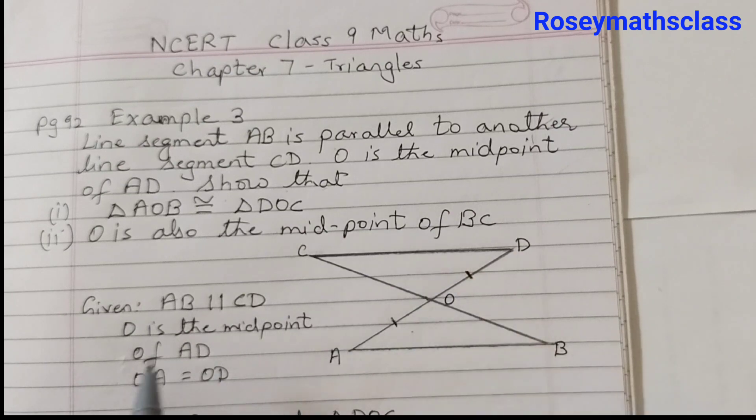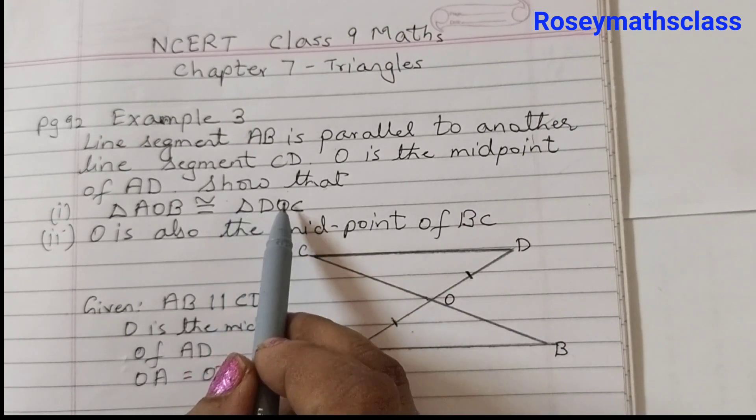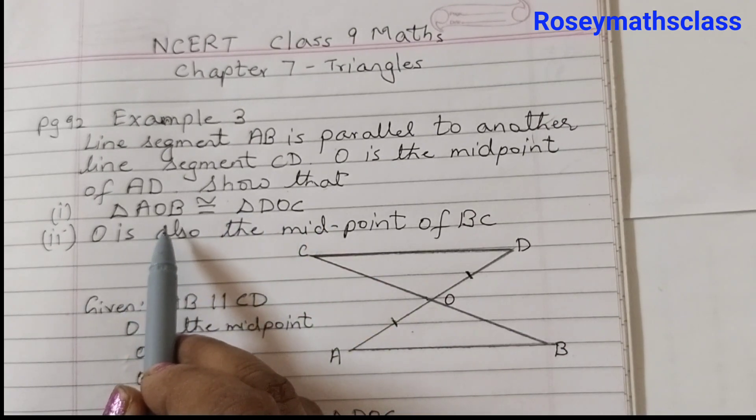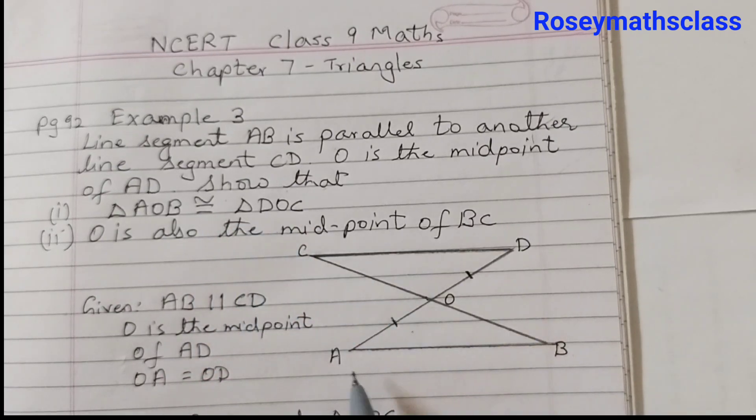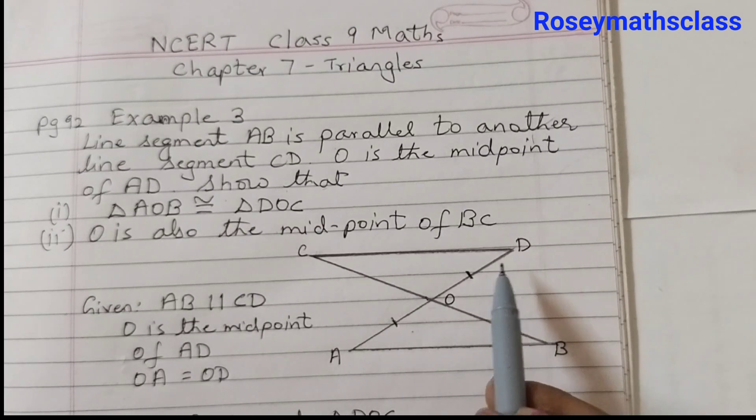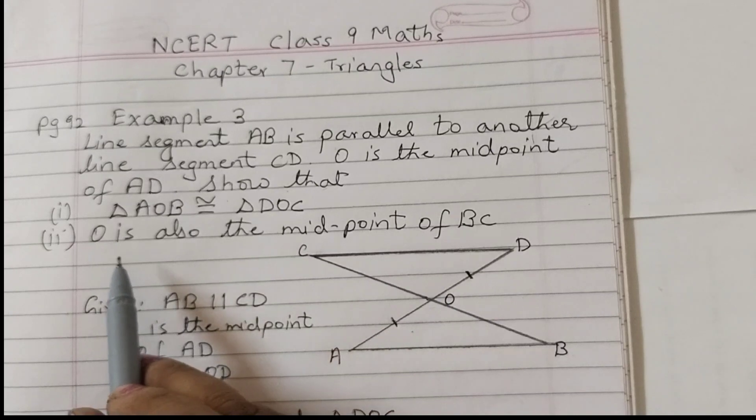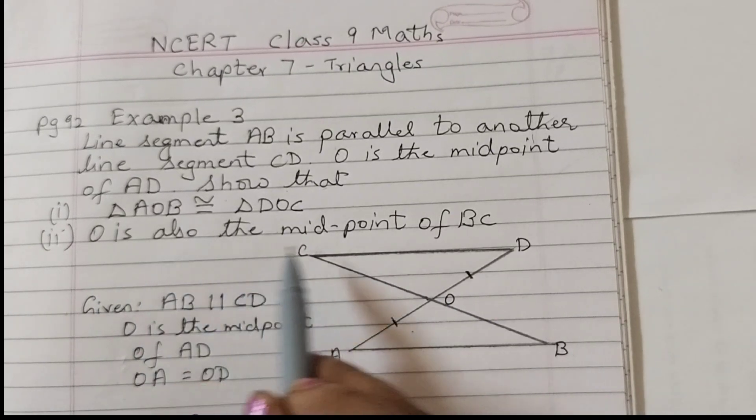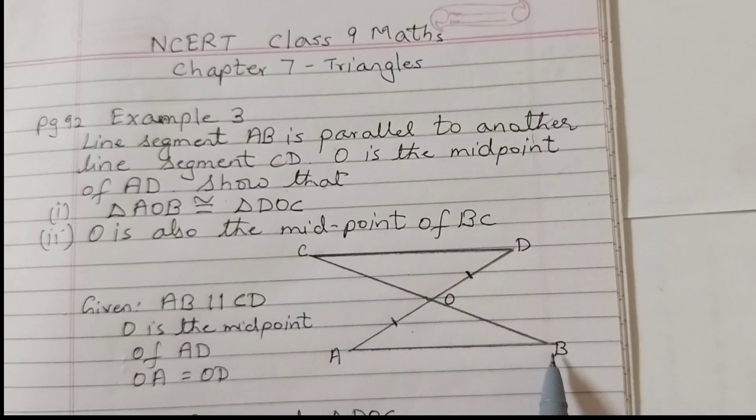So we have given here AB parallel to CD. O is the midpoint, therefore OA is equal to OD. This is given to us. Show that triangle AOB is congruent to triangle DOC. And the second part is O is also the midpoint of BC.